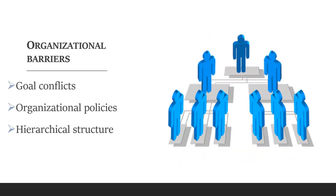The last type is the organizational barrier. This occurs because of goal conflict — the objectives of a person and those of the organization may not align. Sometimes organizational policies are very rigid, unclear, or unfriendly, causing confusion in the minds of people working in that organization. Hierarchical structure — too many levels in an organization, such as top, middle, and lower levels — means messages get filtered and wrong or misleading messages may be passed, leading to obstacles between people working in the same organization. With this, we have seen eight different types of barriers which may obstruct the way a message is communicated.